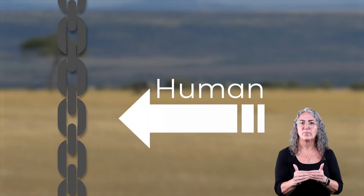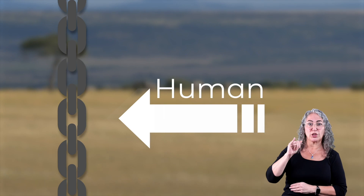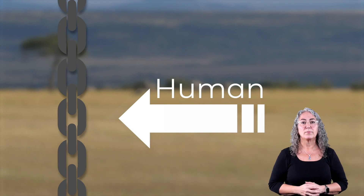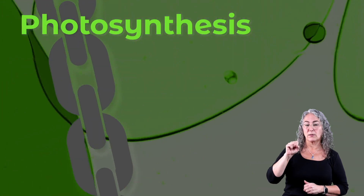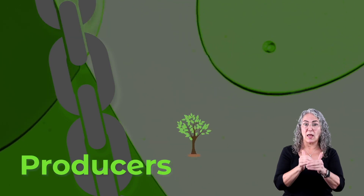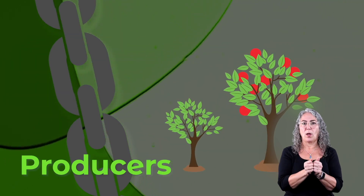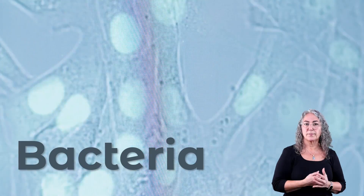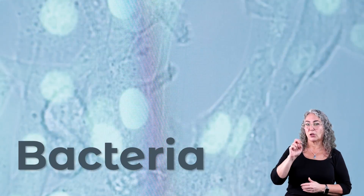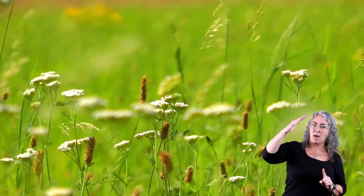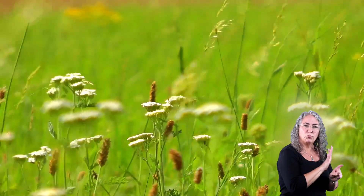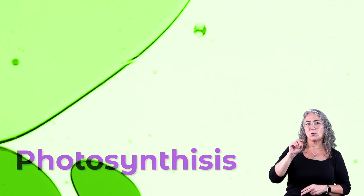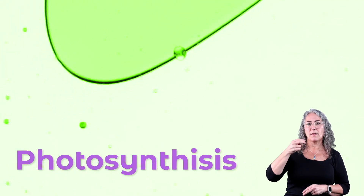You are just one stop on that food chain. Photosynthesis is the first step in the food chain. It starts with producers. A producer is an organism, like a plant, that captures energy from the sun to help it make its own food. This process is called photosynthesis.